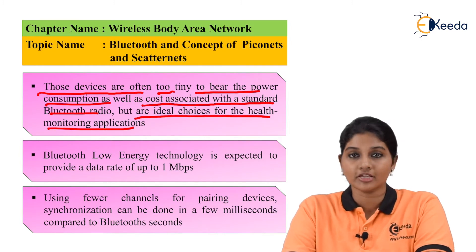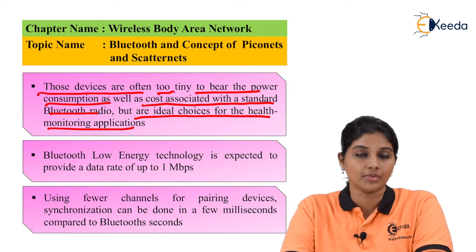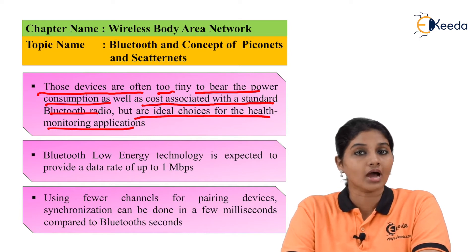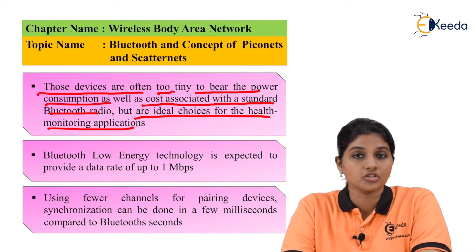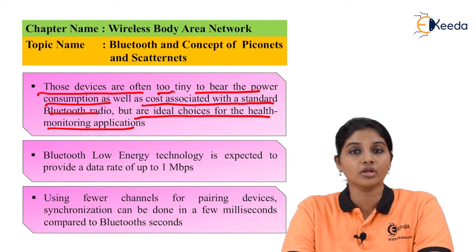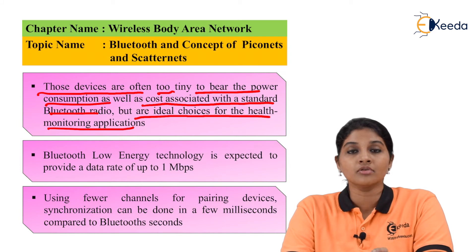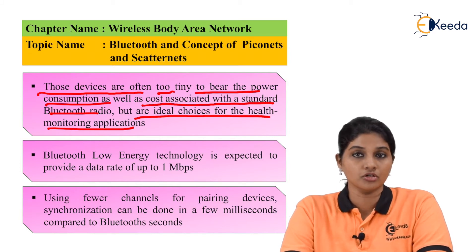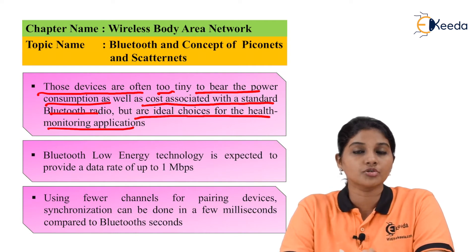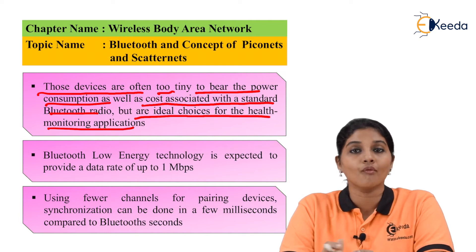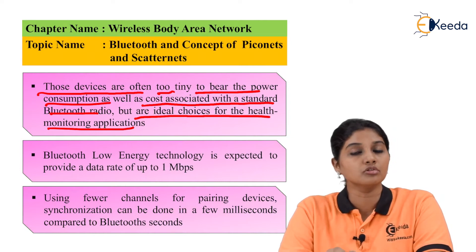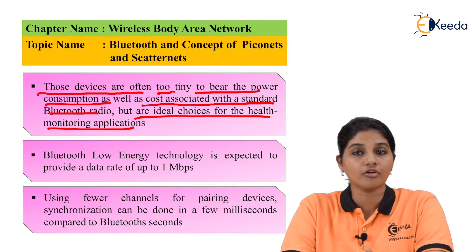One popular application of wireless body area networks is healthcare, in which various sensors monitor vital parameters of the human body including heart rate, blood pressure, temperature, and other parameters. The sensors placed inside the human body must be very tiny so they do not constrain the mobility of the patient. Therefore, wireless technology is required for communication between the sensor and the controlling device, and that requirement is fulfilled by Bluetooth Low Energy, which uses low power for its operation.